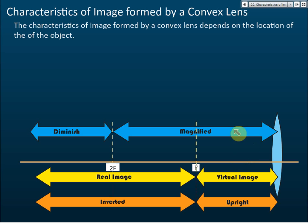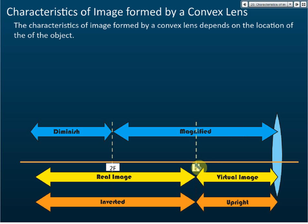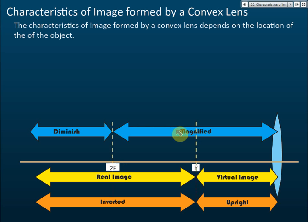For example, if you put your object in Section 1, the image formed is virtual and upright, and it is magnified. So remember: for object distance less than F, the image is always virtual and upright. If the object is placed further than F, then it's real and inverted.